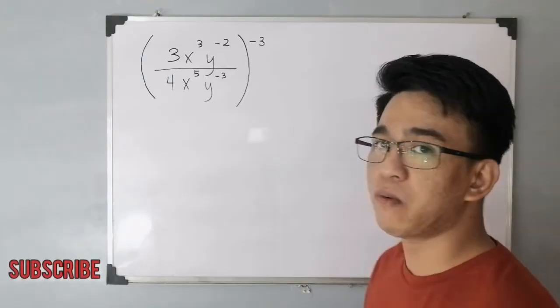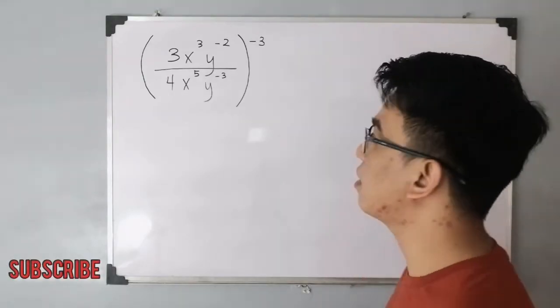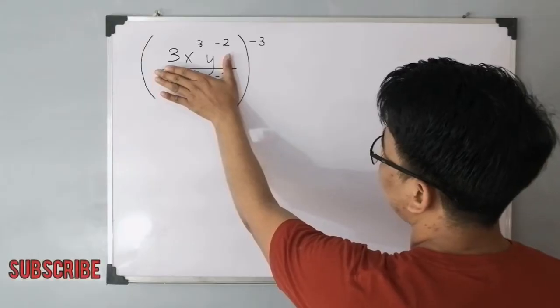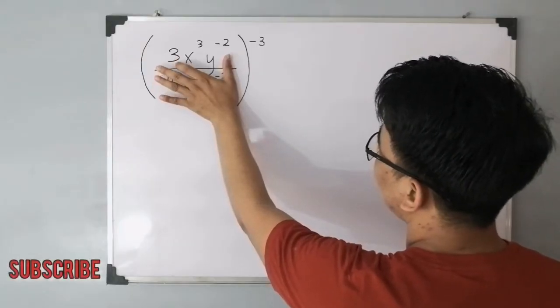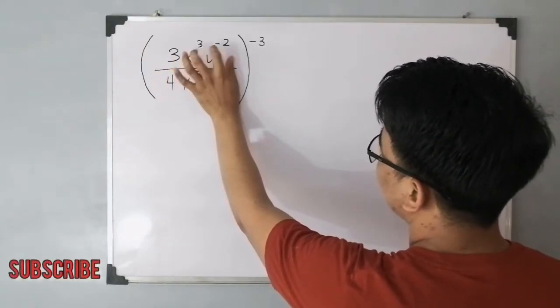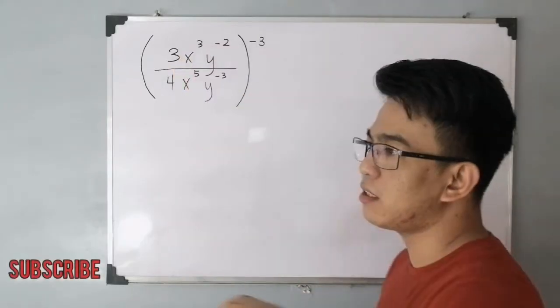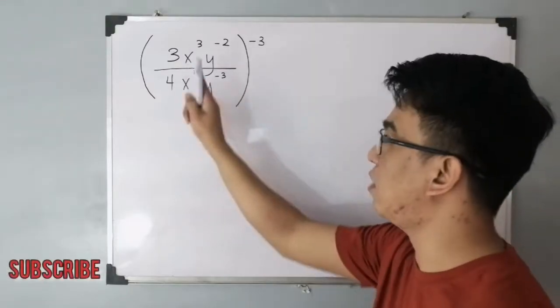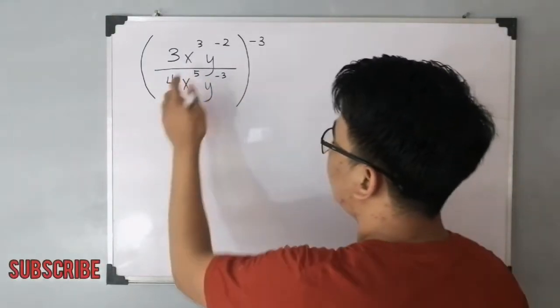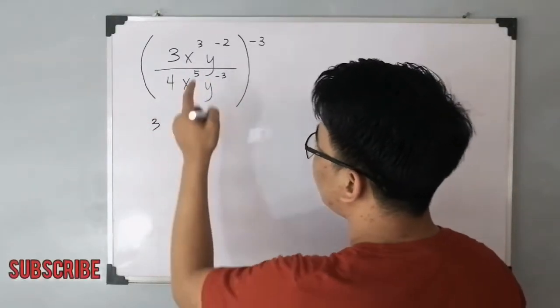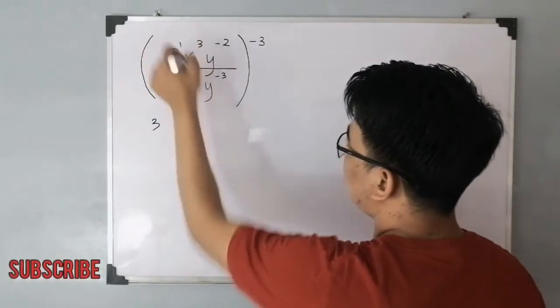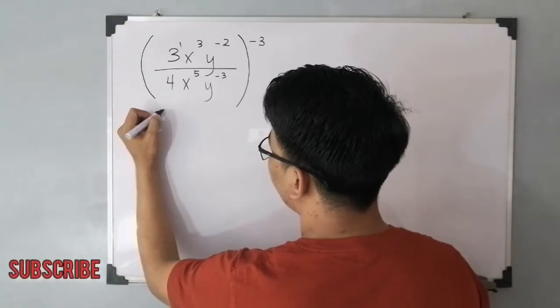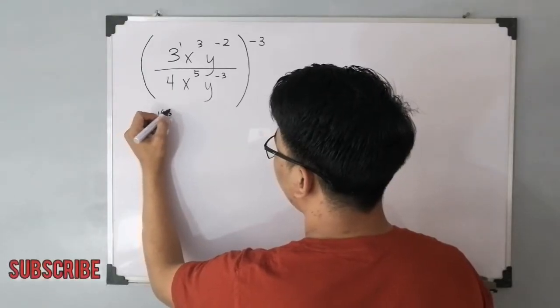So paano ba ginagawa yung power rule sa laws of exponents? Basically guys, let's for example, magfocus muna tayo sa numerator natin. As you can see, we have 3x raised to 3, y raised to negative 2. All we need to do is to distribute or to multiply the exponent outside sa exponents sa base sa loob. So sa 3 natin, for the numerator, originally meron sya rito ng exponent na 1, so that will be 3 raised to 1 times negative 3.